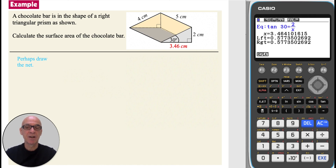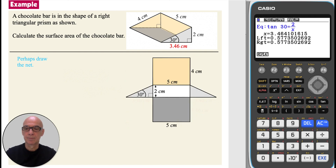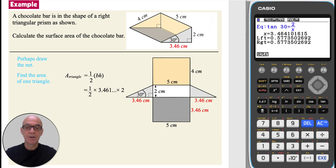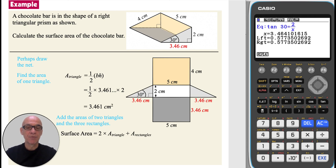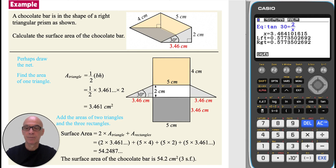To calculate the surface area, draw the net and add on the value of the width. To find the area of one of the triangles, use the formula one half base times perpendicular height, remembering to use an accurate value of the base. To find the surface area, add the areas of the two triangles and the three rectangles. So the surface area of the chocolate bar is 54.2 cm², correct to three significant figures.